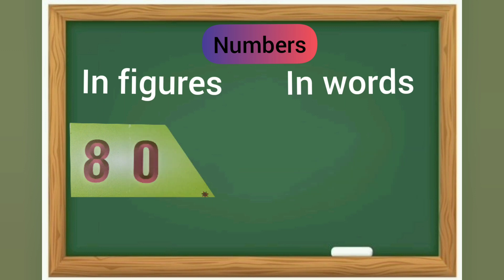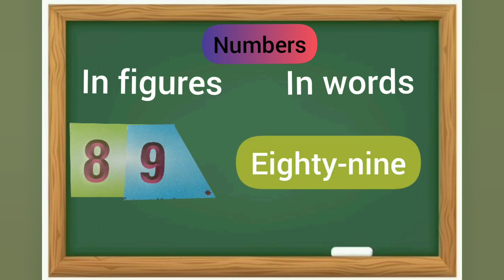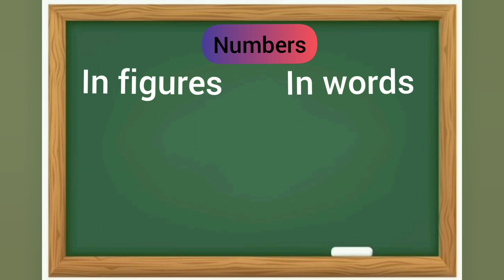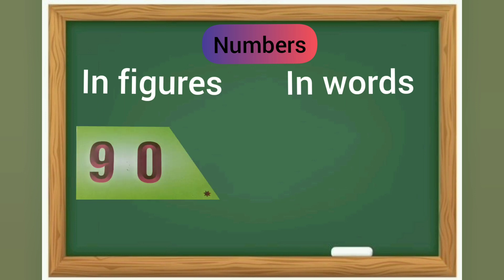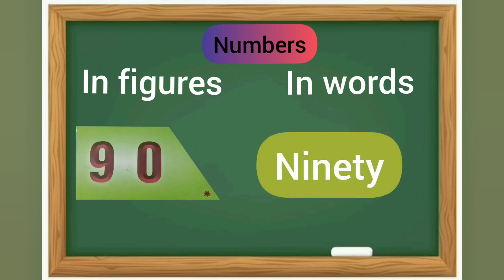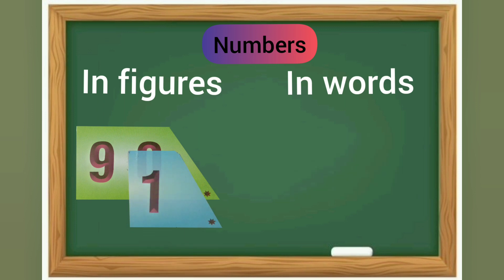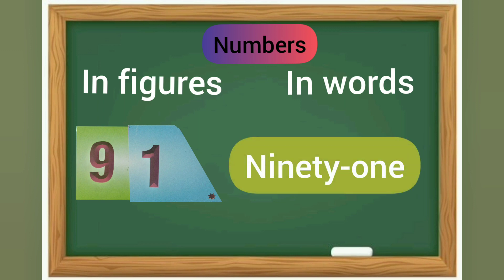Eighty-eight. 80 and 9 is 89. In words it is E-I-G-H-T-Y N-I-N-E, eighty-nine. Our next number is, yes, after 89 it is 90. In words we write it as N-I-N-E-T-Y, ninety. 90 and 1 is 91. In words it is N-I-N-E-T-Y O-N-E, ninety-one.